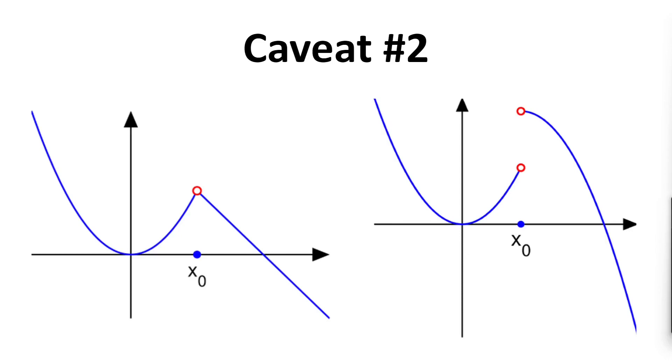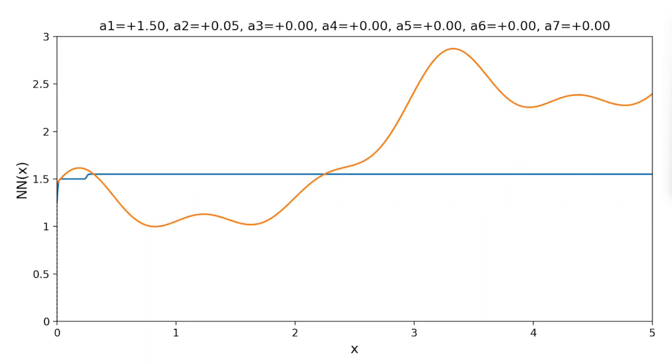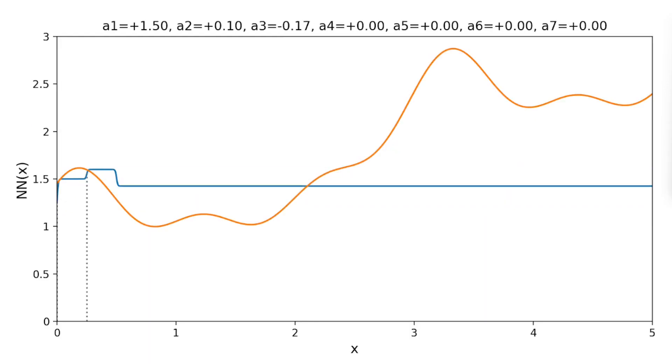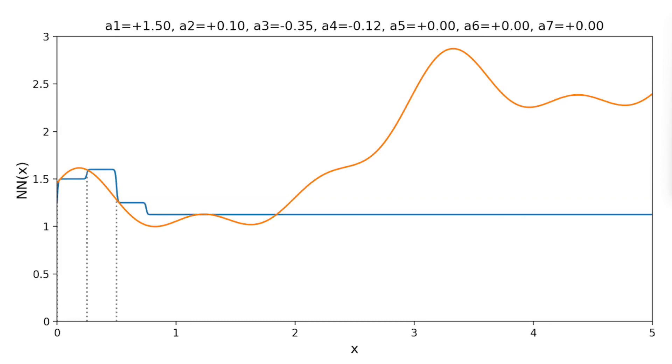However, in practice, this is not such an important limitation because usually a continuous approximation is good enough. So, a more concise statement of the universality theorem is that neural networks can approximate any continuous function to any desired precision.